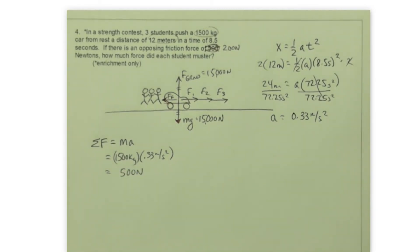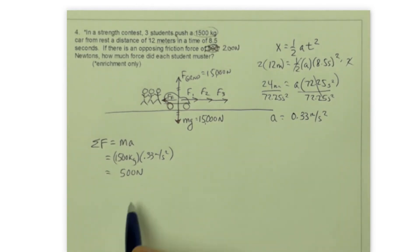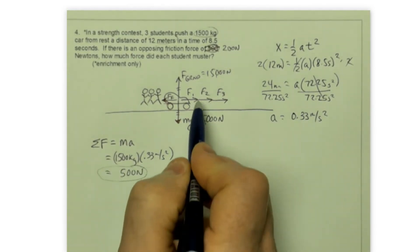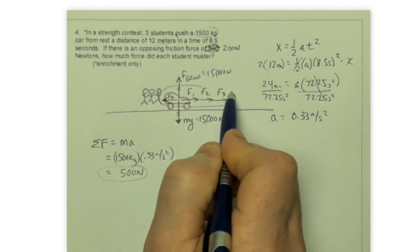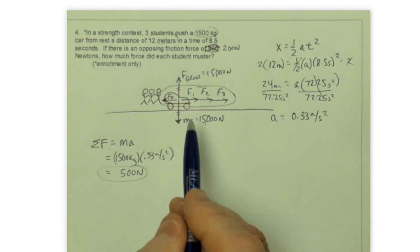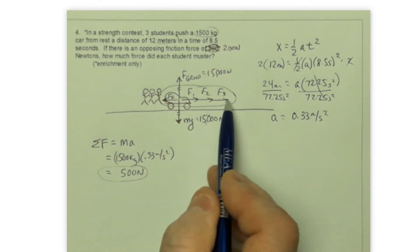I want to pause for just a moment and make sure we understand what that net force means. That 500 newtons is the combined forces of those four. So I don't know what F1, F2, or F3 are yet. They're not 500 when I add them together. The total is 500.